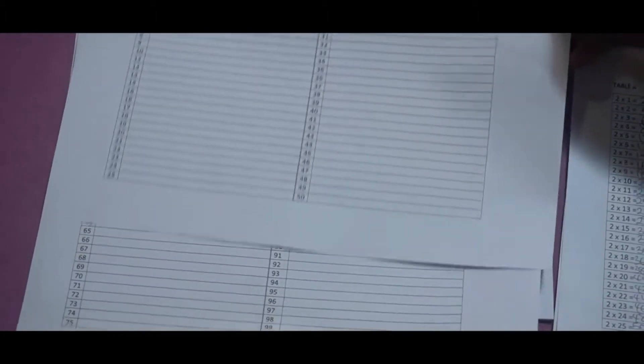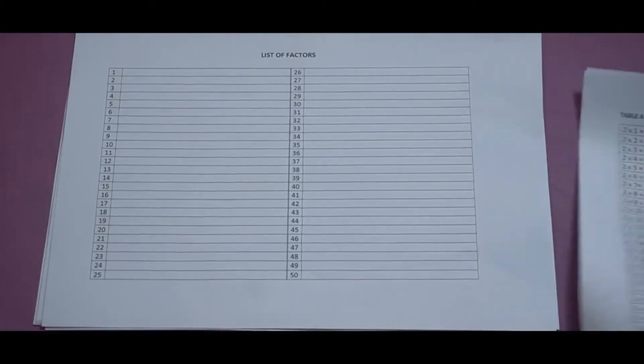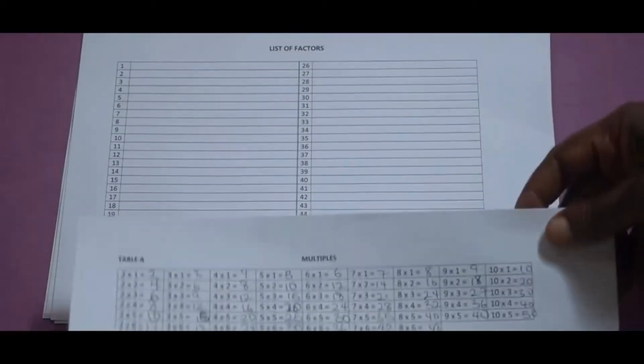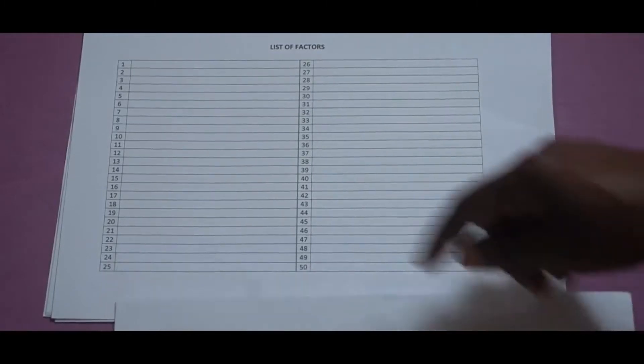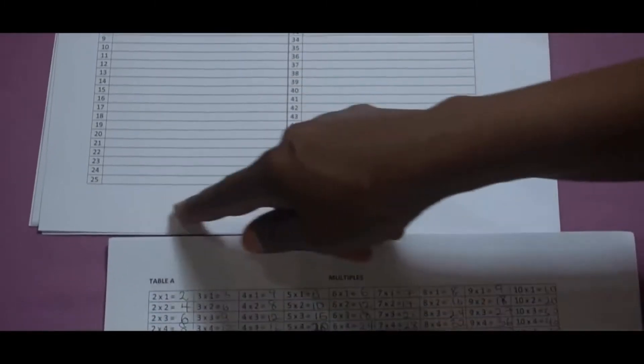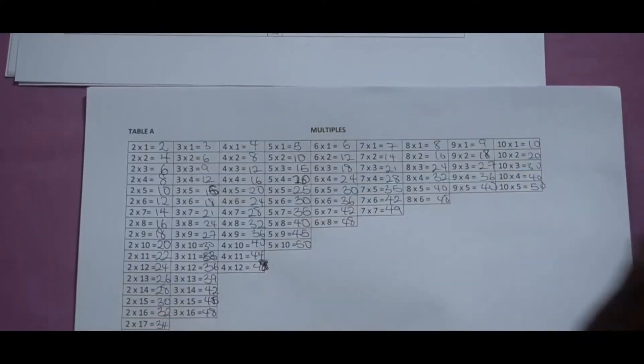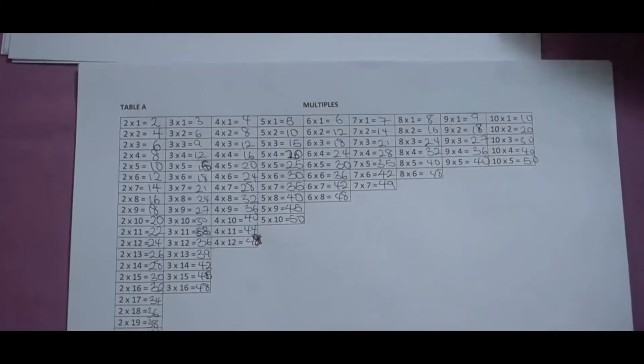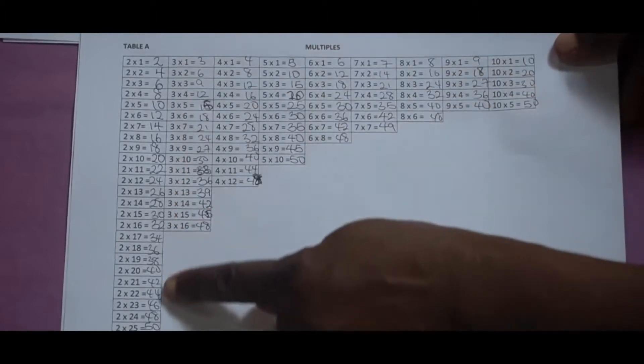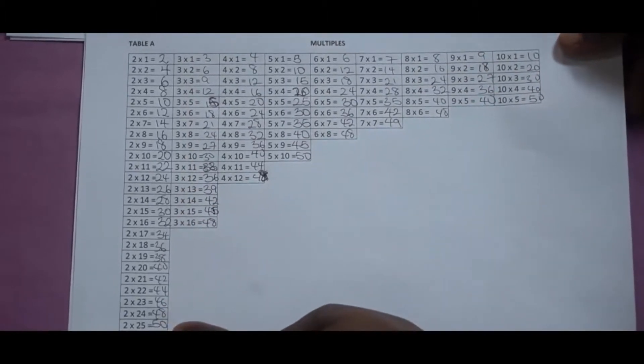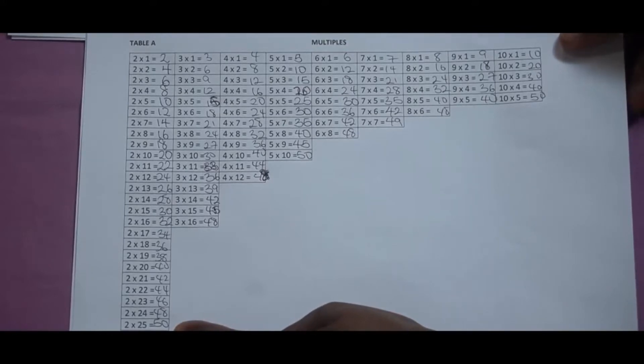So we are going to start with the first sheet. You are using your table. You can choose a number here, any number from 1 to 50. What number do you want to choose? 24. Okay, so we look at your table here and see where we have 24 to find the various slots. Here we have 24. So let's check, where do you have 24?